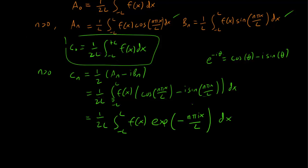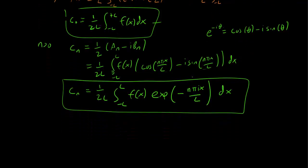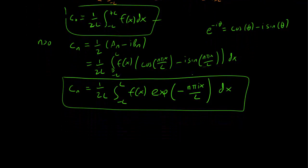Now notice that these two formulas are consistent. If you set n equals 0 over here, you get exponential of 0, which is 1, and you get the f(x) by itself like you do over here. So hopefully we can get one formula that applies to all three cases.